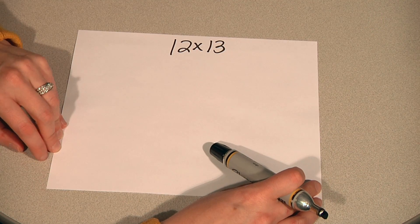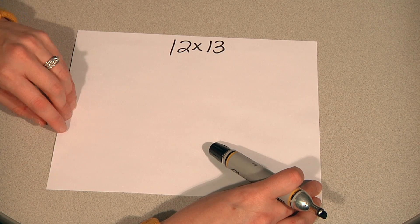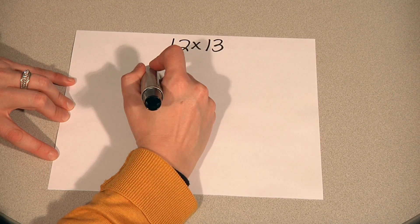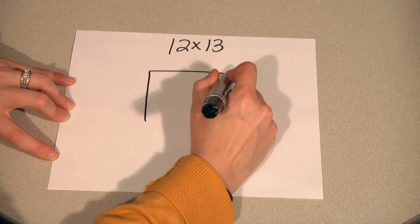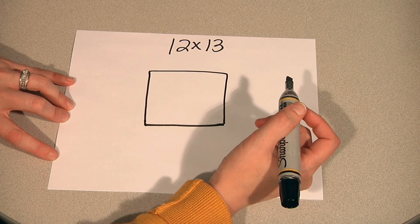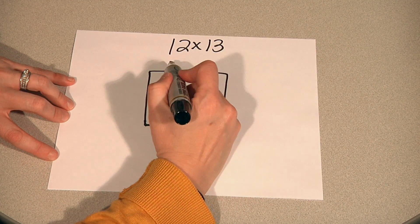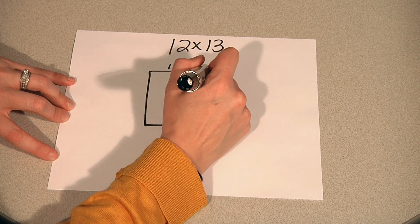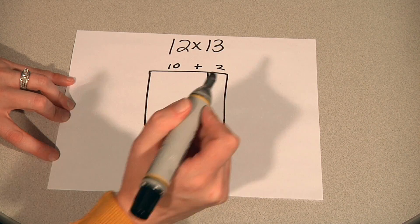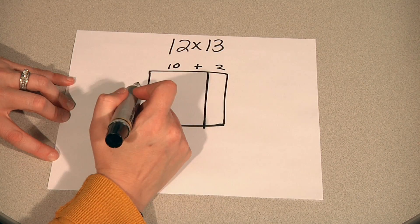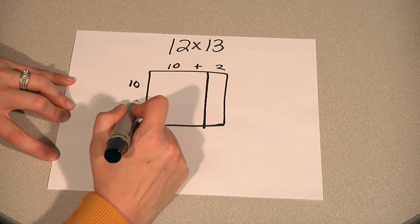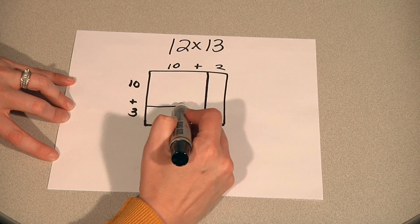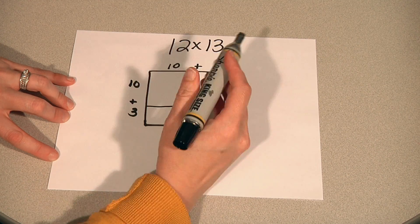Let's use an area model for multiplication. Here we have twelve times thirteen. In order to do this, we teach students to decompose each number into its place value. So for twelve, we're going to do ten plus two. And for thirteen, we're going to do ten plus three.